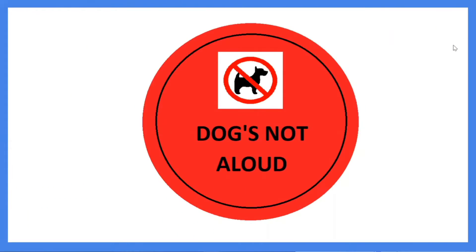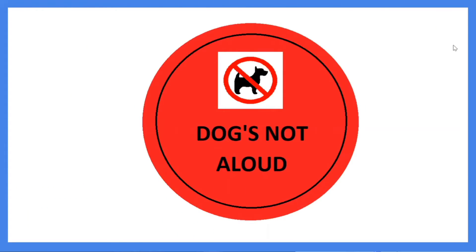For our activity today, please grab a pencil and some paper. The sign reads: Dogs not allowed. How do you think that I can fix this sign? Are there any errors that you notice? Write down what you think I should change this sign to say.